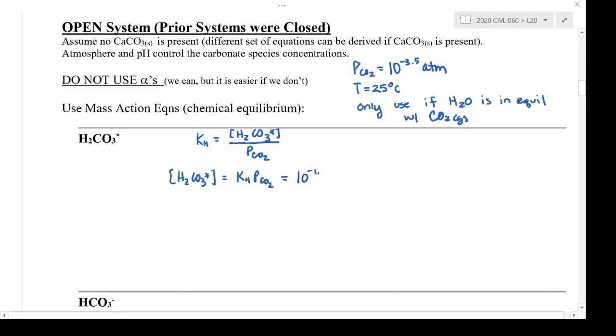So Kh is 10 to the minus 1.5, pCO2 is 10 to the minus 3.5, and so that gives me a result of 10 to the minus 5 molar concentration, which is an interesting result because it tells us that H2CO3 star is constant in an open system—and by open I mean in equilibrium with atmospheric CO2.